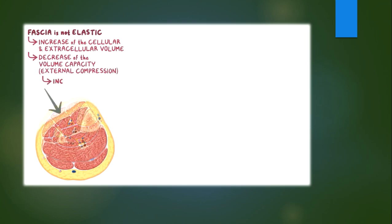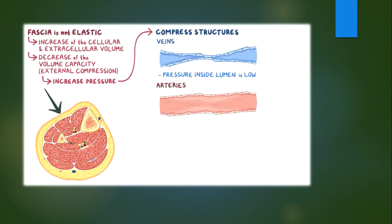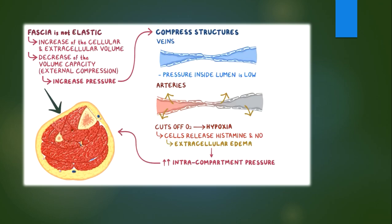Since the fascia is not elastic, it can't stretch much. Therefore, any increase of the cellular and extracellular volume or a decrease of the volume capacity, like with some external compression, will lead to the increase of the pressure inside the compartment. This will compress the structures within, and the first ones to feel the effect of compression are the veins, because the pressure inside their lumen is normally low. As the pressure increases, the arteries will become compressed next, and this obstructs the normal blood flow. This cuts off the oxygen supply and hypoxia develops, which causes cells to start releasing substances like histamine and nitric oxide. These substances cause capillaries to become leaky, so fluid leaks out, causing extracellular edema that further increases intracompartment pressure.